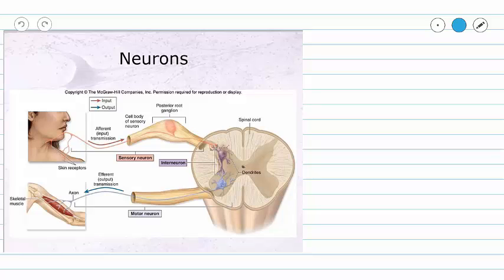This video is a continuation in our series on the nervous system, and it's going to cover the functional classes of neurons. So just like our nervous system, which can be divided into functional classes, we can divide our neurons into three different functional classes.